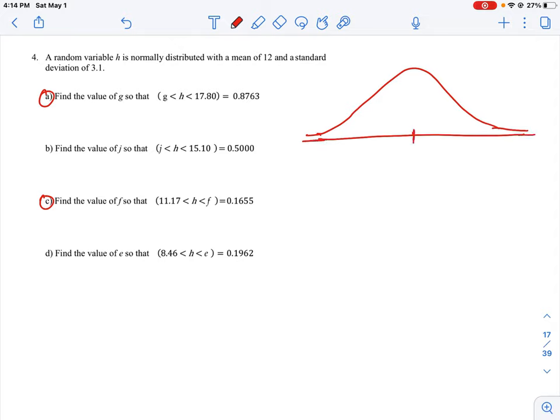We have the middle of our curve, and we know again our middle is 12—that's our mean—and our standard deviation is 3.1. The interval we're playing with this time is from 11.17, so it's just going to be below 12. I'm just going to mark in 11.17 up to another interval.